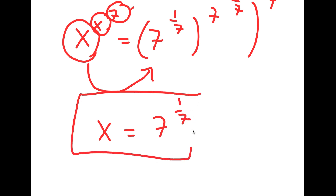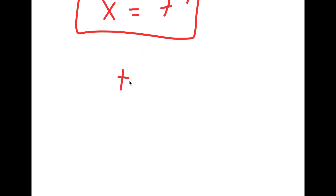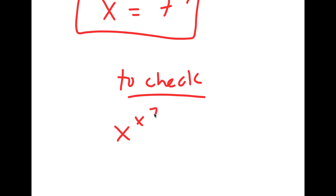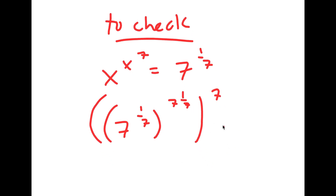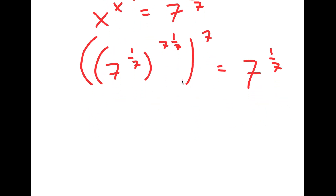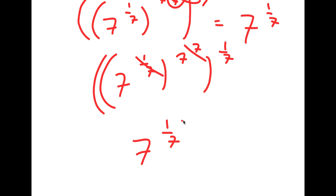To check, I'm going to plug this back into the original equation: x to the power of x to the power of 7 equals 7. Substituting x = 7 to the power of 1 over 7: 7 to the power of 1 over 7, raised to the power of 7 to the power of 1 over 7, raised to the power of 7, equals 7 to the power of 1 over 7. We can switch the exponents, and the 7s cancel out, leaving 7 to the power of 1 over 7 equals 7 to the power of 1 over 7. Confirmed.